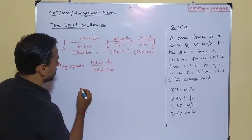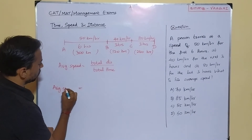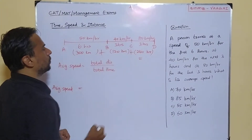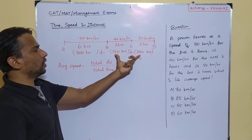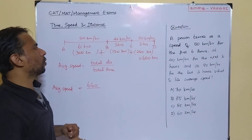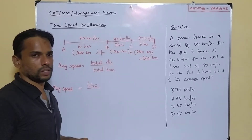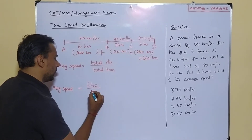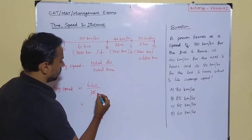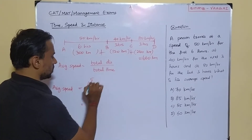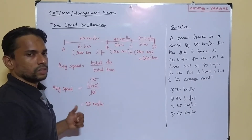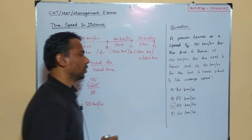So average speed equals total distance divided by total time. Total distance is 300 plus 120 plus 240, which is 660 kilometres. Total time is 6 plus 3 plus 3, which is 12 hours. So 660 divided by 12 gives us 55 kilometres per hour. So the answer is option C — 55 kilometres per hour.